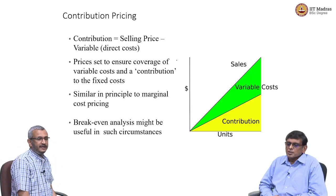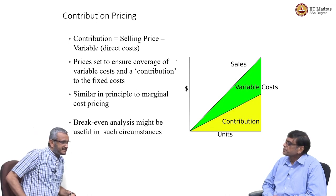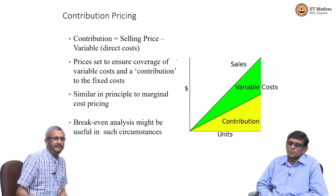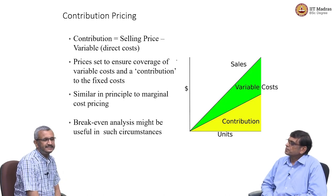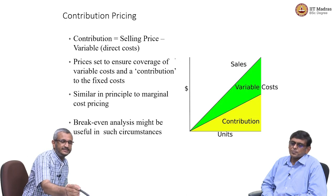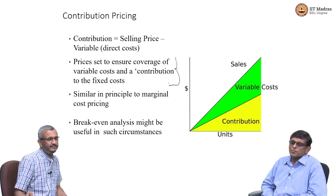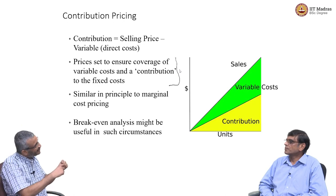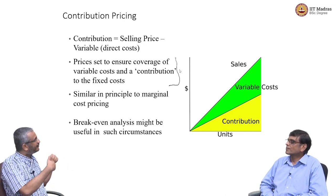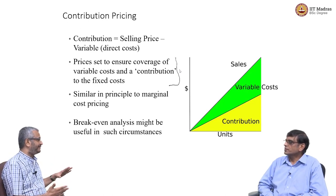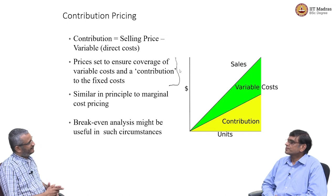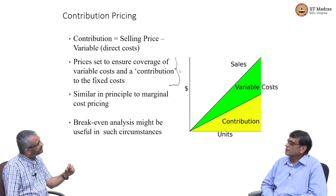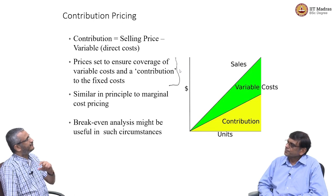In cost-plus pricing, the question is which costs to cover first. Generally, firms cover 100% of variable costs and a fraction of fixed costs, then add the markup. Variable costs must be fully covered. The formula is: 100% variable costs plus a fraction of fixed costs plus markup — then the pricing is arrived at depending on product and market.